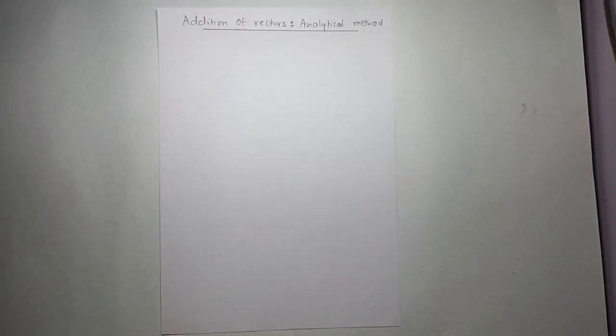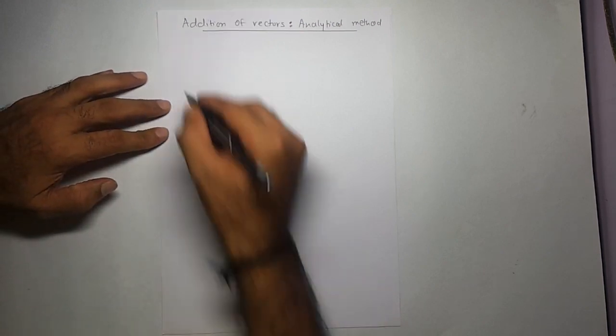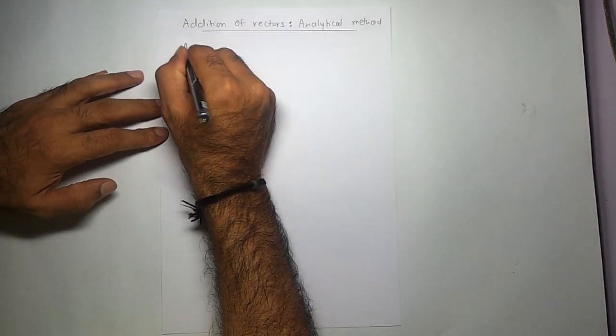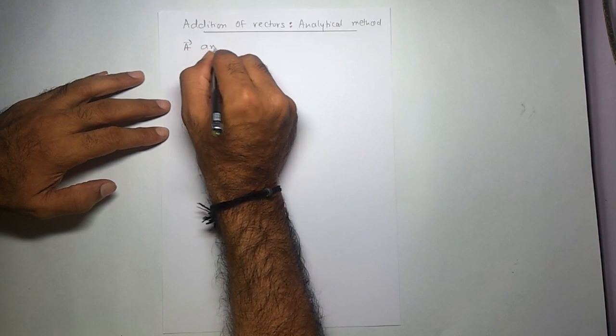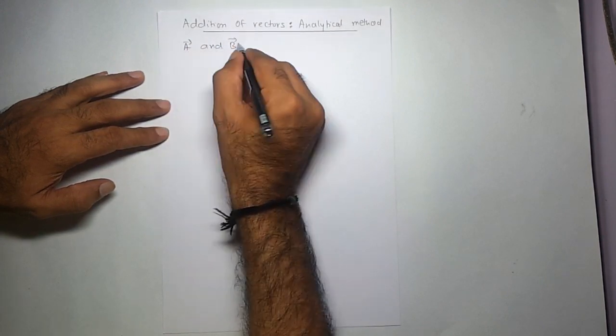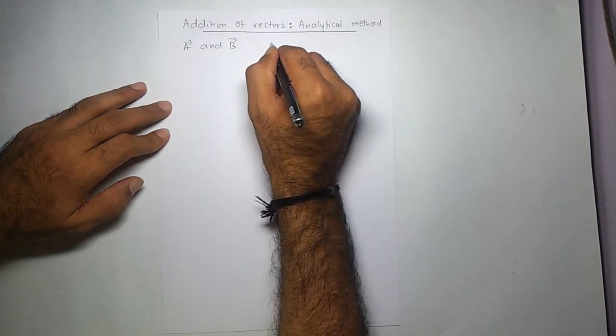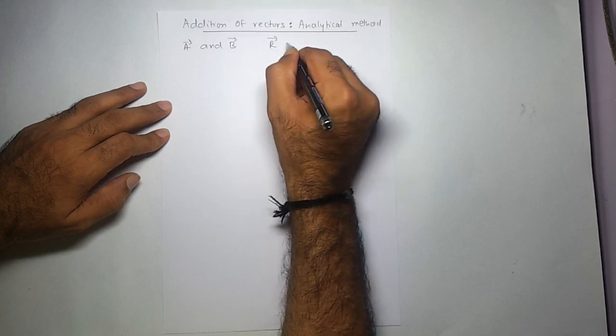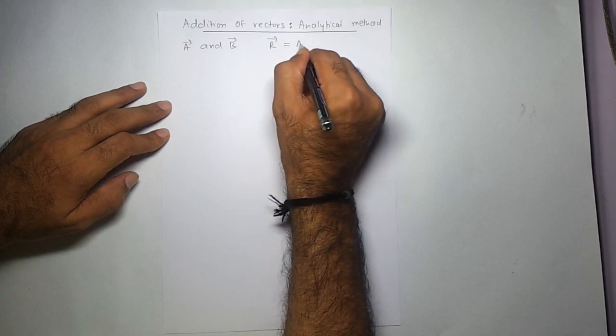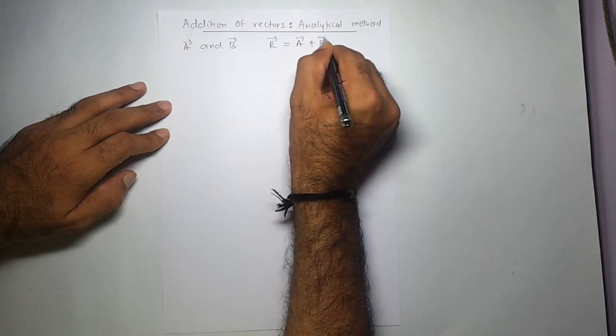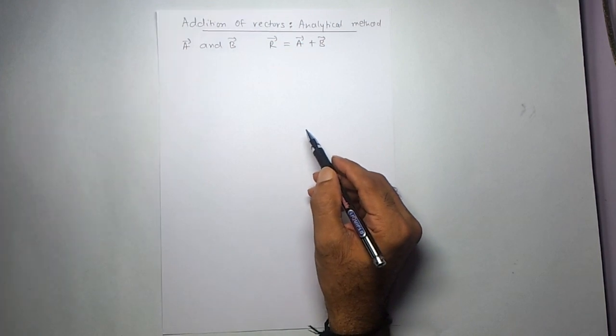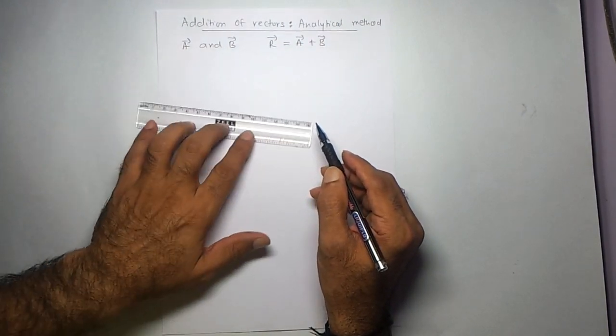Hi, I'm Sridhar and I'm doing this video on addition of vectors. We'll be looking at the analytical method of addition of vectors. Let's say we have two vectors, vector A and vector B, and I want to find out the resultant R of these vectors, which is A plus B.